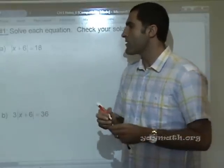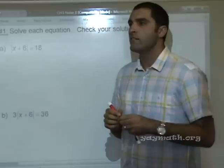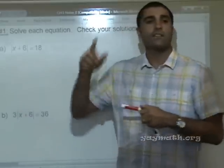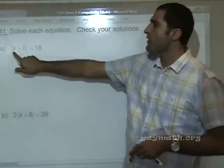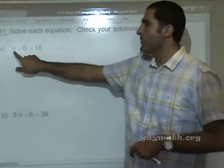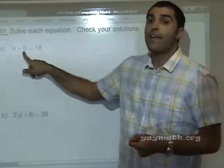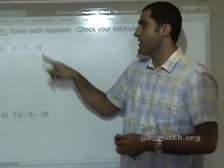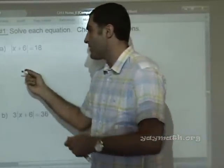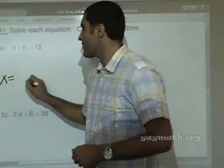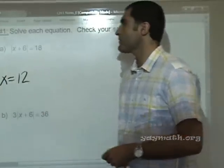So, can you think of a possible value for x that'll work here? Anyone? Yes? 12. 12 would work. Let's try it. If x was 12, it would be 12 plus 6. Absolute value of 12 plus 6 is absolute value of 18. Absolute value of 18 is 18. I'm actually going to write x equals 12 here, all right?